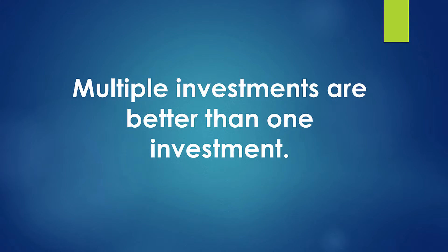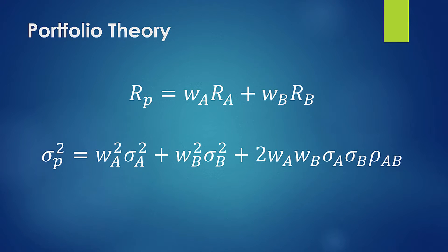Portfolio Theory is based on a paper written by Harry Markowitz in 1952. What this paper does is lay out a very basic concept: that multiple investments are better than one investment. This is the basis for what we've come to know today as diversification. This idea of diversification is based on an equation published by Markowitz, and while the math gets pretty complicated, the core concept is very simple and very powerful.